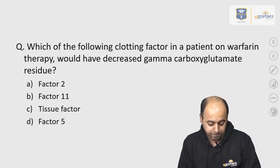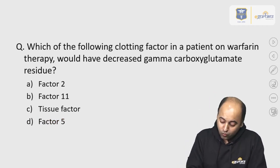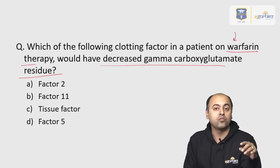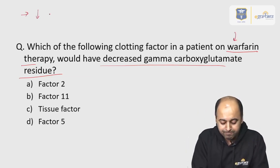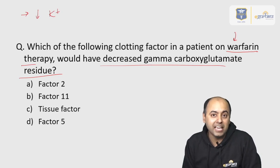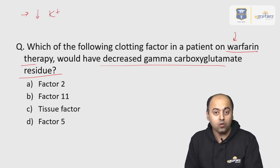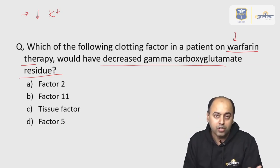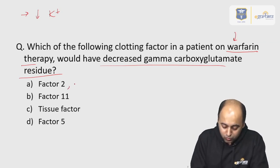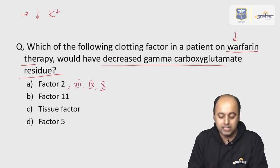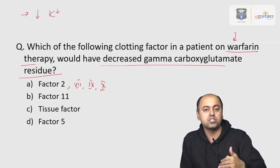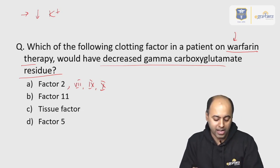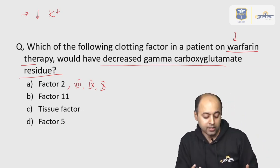On vitamin K and warfarin: warfarin inhibits the action of vitamin K. Vitamin K is required for gamma-carboxylation of glutamate residues on clotting factors II, VII, IX, and X. Without vitamin K, these factors cannot be gamma-carboxylated and therefore cannot function properly.